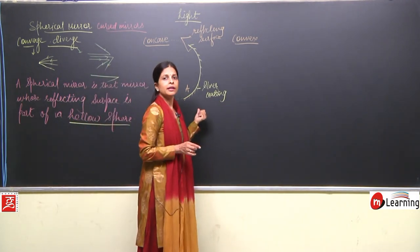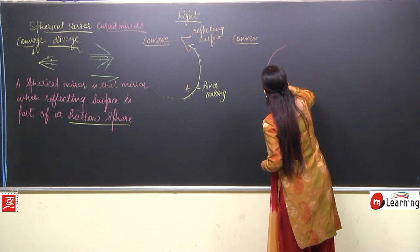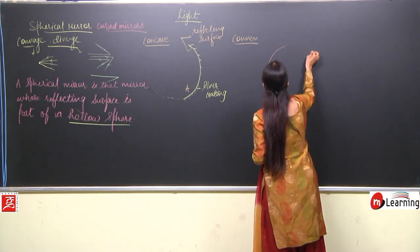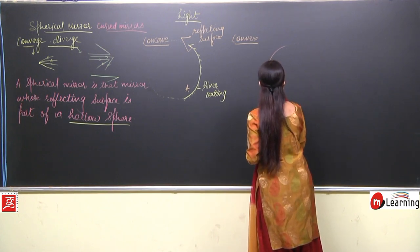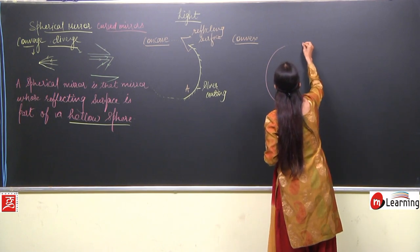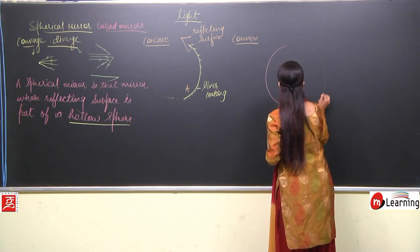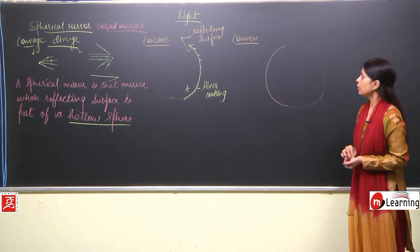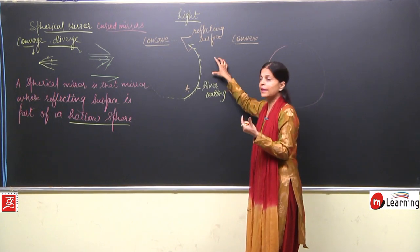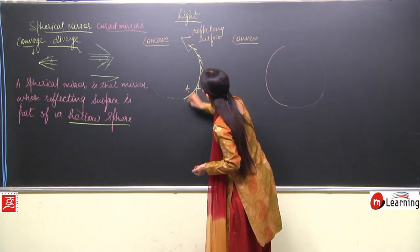Now we will talk about the convex mirror. Again, a part of the hollow sphere — if I make it like this, it is understood as a part of a hollow sphere. Now the silver coating was on one part, shown by oblique lines, and from there reflection does not take place.